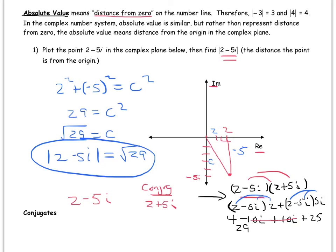There's actually an interesting relationship, if you'll notice, between the absolute value of a complex number and its conjugate. I'll leave it to you to figure out what that relationship is. But the idea is that multiplying conjugates has the effect of eliminating the imaginary part.